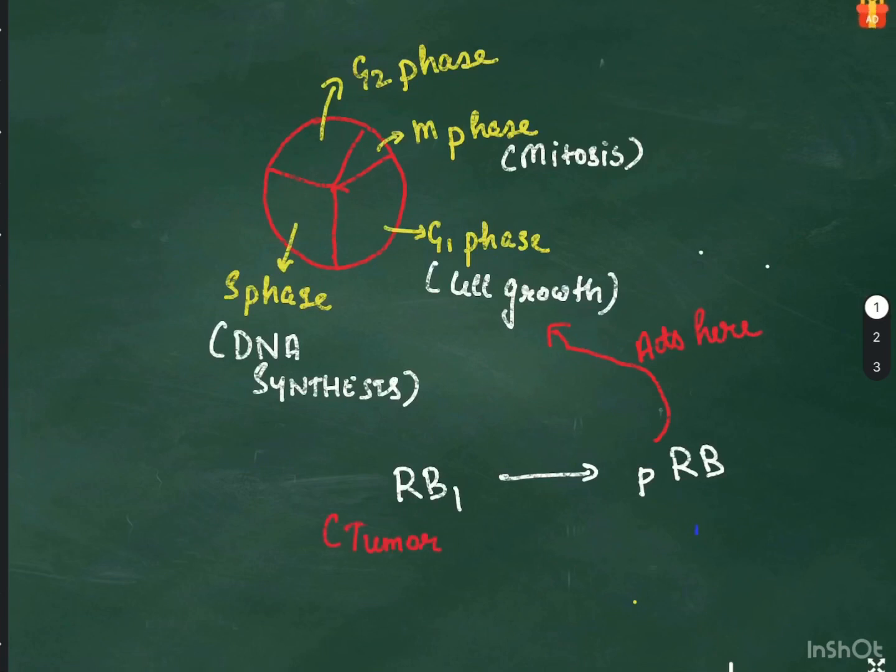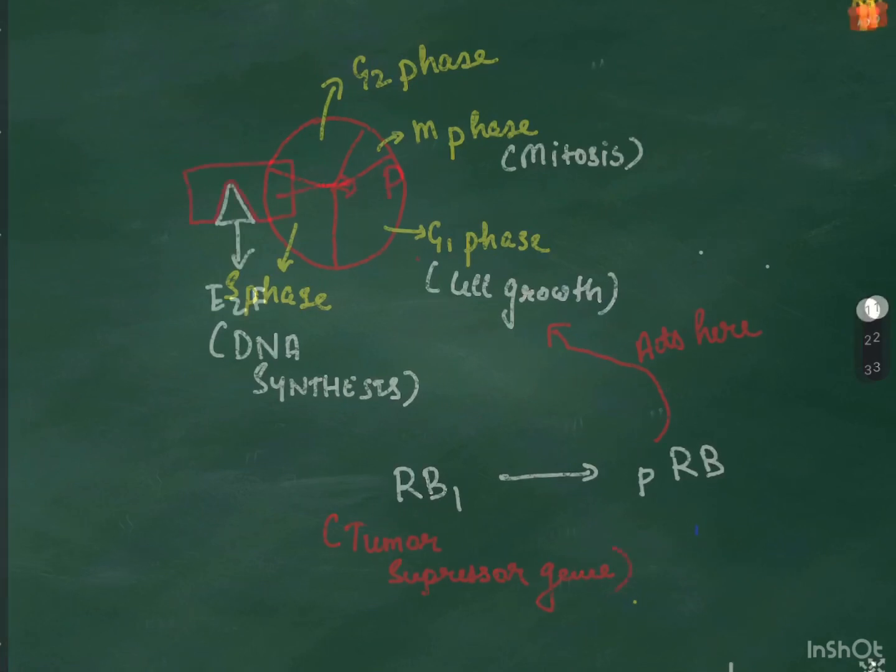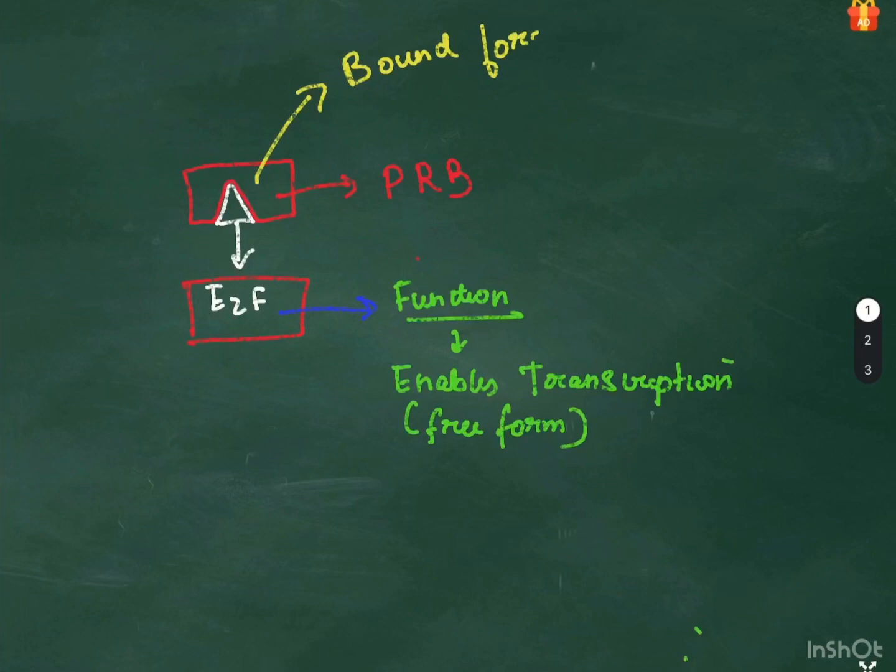How it acts is that E2F is a protein which enables the transcription of the DNA. PRB has an affinity for the E2F gene. When it is in a bound form, it prevents the transcription of the DNA. While when E2F is in the free form, it enables the transcription of the DNA.